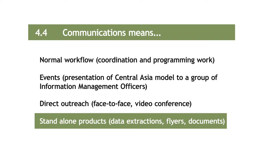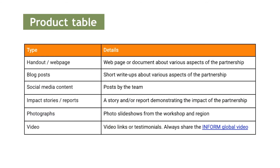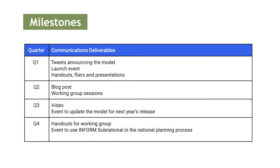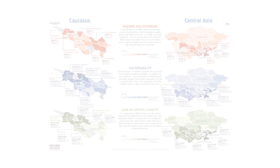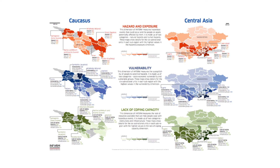Next, create a product table that defines your output. You may also want to create a simple milestone table that defines which products will go live by which date. The INFORM Central Asia team created a flyer on the model and its findings. Here are some examples of great communications products that came out of their model.